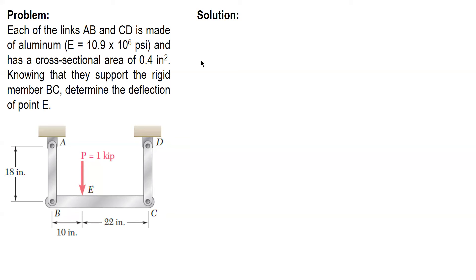Each of the links AB and CD is made of aluminum with modulus of elasticity equal to 10.9 times 10 to the 6 psi and has a cross-sectional area of 0.4 square inches. Knowing that they support the rigid member BC, determine the deflection of point E.